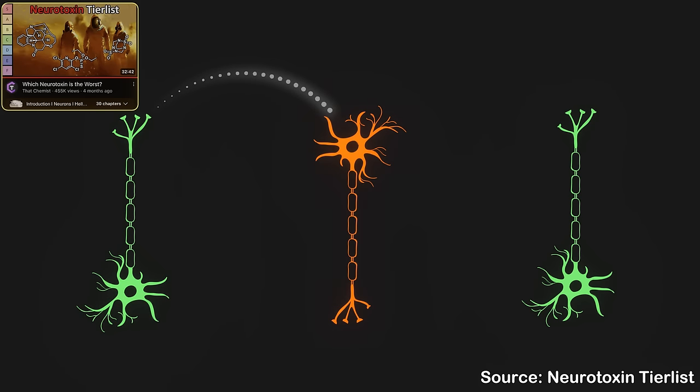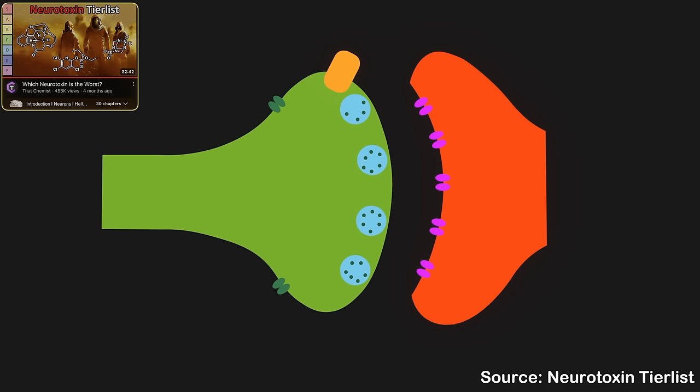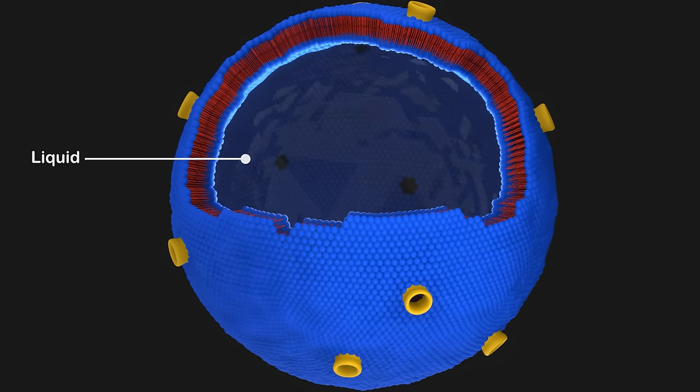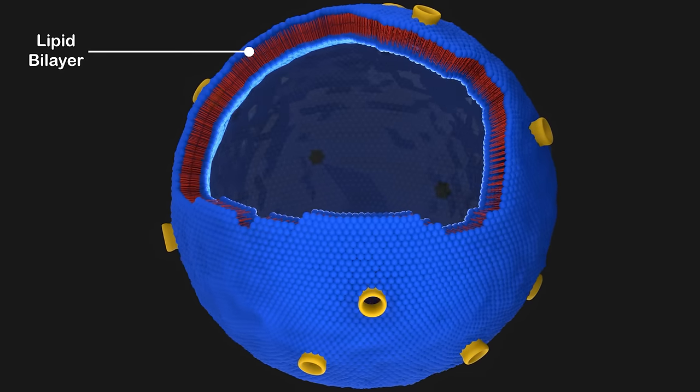We previously discussed how communication works in the neurotoxin video. To prepare for release, neurotransmitters have to make their way to the synapse, where they must first be packaged into vesicles. In cell biology, a vesicle is a structure within or outside of a cell consisting of a liquid, or cytoplasm, enclosed by a lipid bilayer.